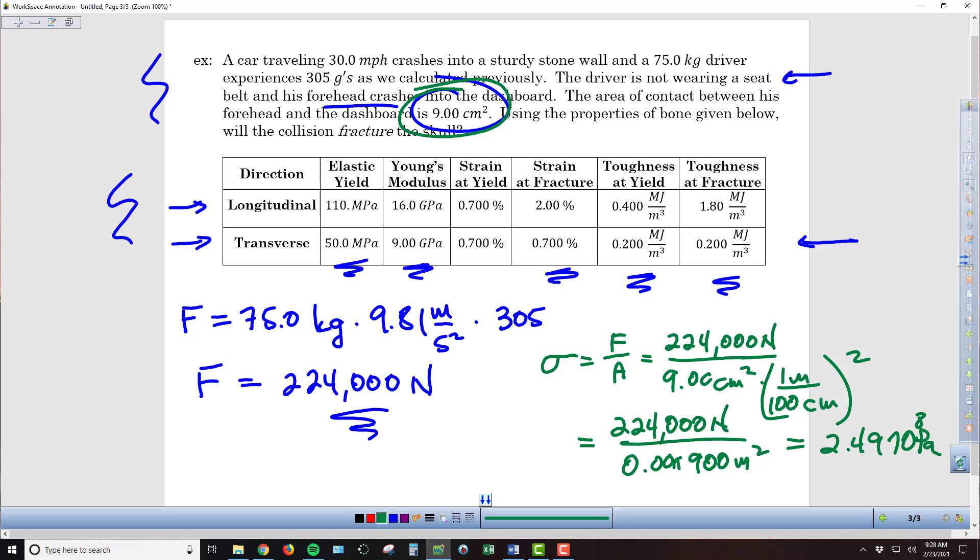Or if we want to convert that into our appropriate prefix form, that's going to be 249 megapascals. That's the stress that the skull of the person is going to experience. Certainly if we compare that against the elastic yield of the bone in the transverse direction, we can see that our person is not going to survive with their skull intact. This is almost certainly going to be an accident that's going to result in the death of the passenger or the driver.